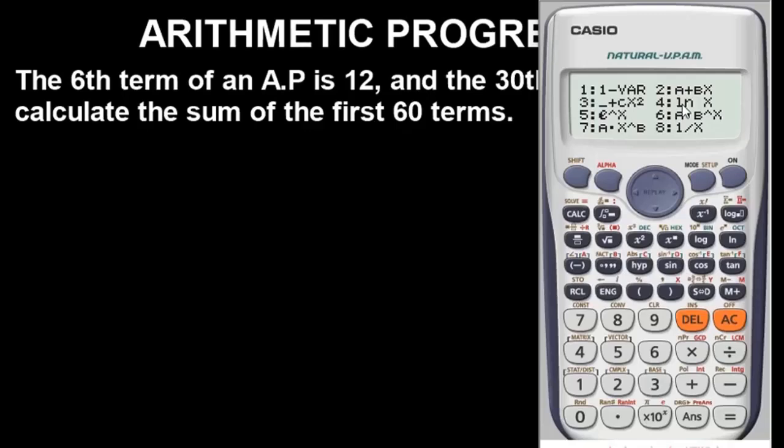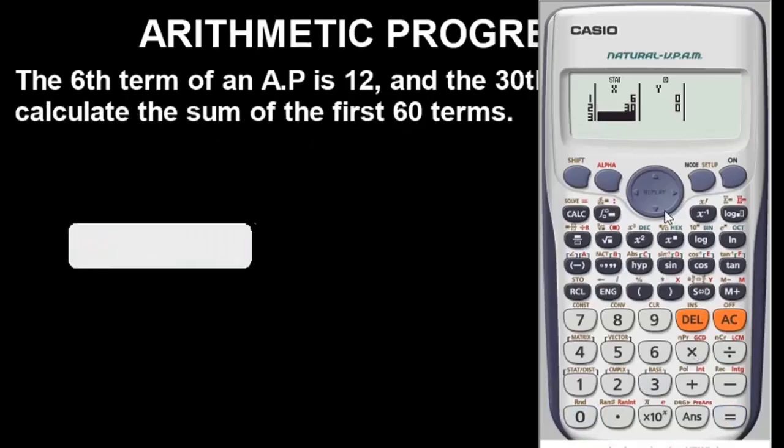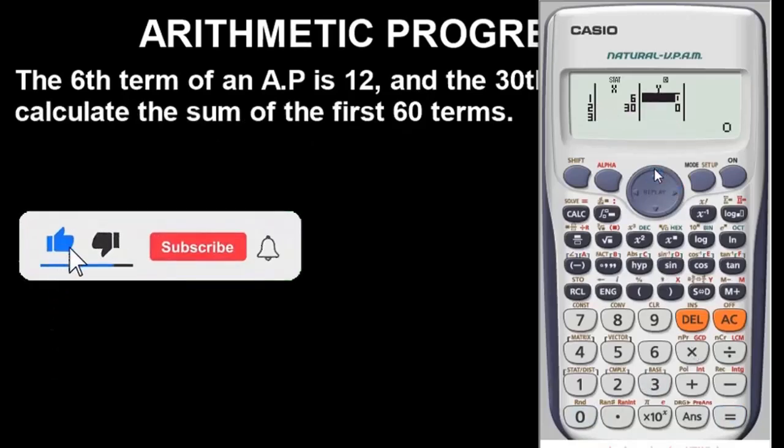Now once you get here, very important - once you miss this you will miss the whole thing. The right option you will use for arithmetic progression is option 2. Any other option will give you the wrong value. Press option 2. Now let's input our x values - these will be the terms we have. We have 6th and 30th term in the question, so you put 6 first, then 30.